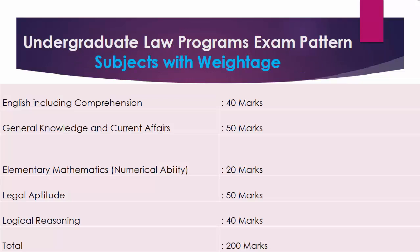Undergraduate Law Programs Exam Pattern — Subjects with Weightage: English including Comprehension, 40 marks; General Knowledge and Current Affairs, 50 marks; Elementary Mathematics/Numerical Ability, 20 marks; Legal Aptitude, 50 marks; Logical Reasoning, 40 marks. Total: 200 marks.